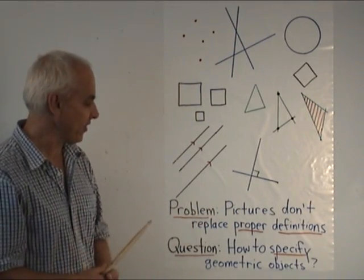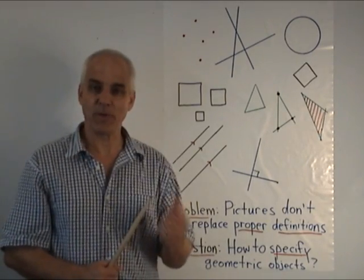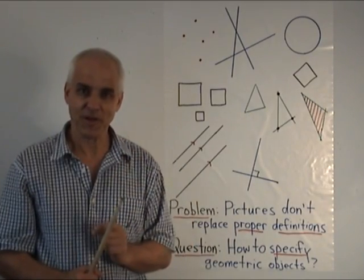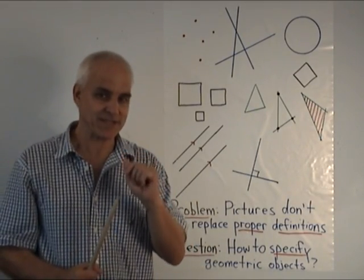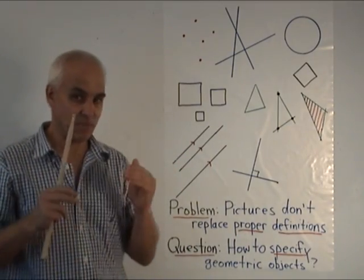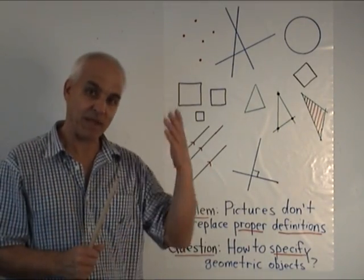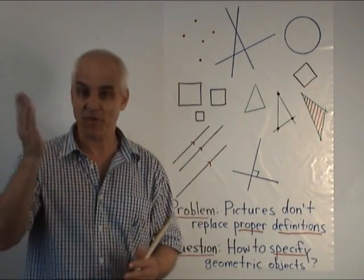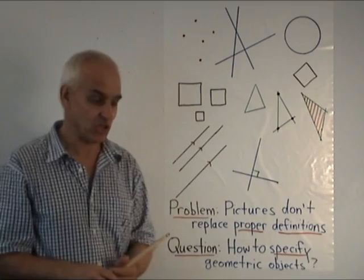The problem with all this is that pictures don't replace proper definitions. When we come to do proofs we need more precise definitions to base everything on. That's going to be a very big challenge for us. Replacing intuitive everyday understandings of things with formal precise mathematical definitions.